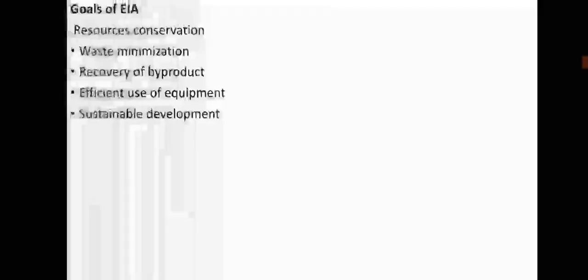The main goals of EIA are conservation of all types of natural resources, minimizing the formation of waste, recovery of byproducts, efficient use of equipment and sustainable development. Overall, the main goal of EIA is to protect our environment from harmful impacts and to maintain sustainability for future generations.